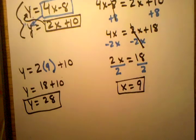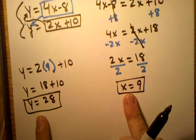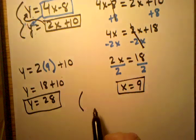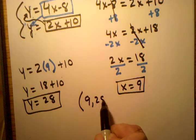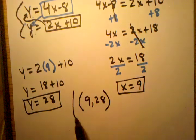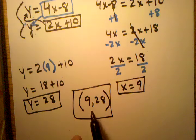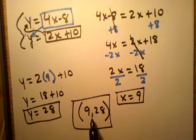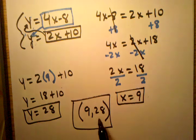So now that I have my two coordinates for the point, my actual solution for the system of equations is 9, 28. And this is what I would call, this is the point that if I actually graph these two lines on the graph, this is the point where those two lines would cross through each other at that one point.